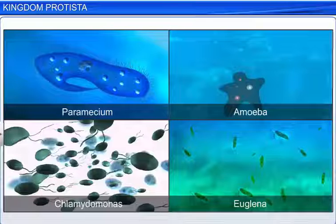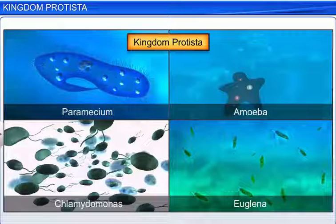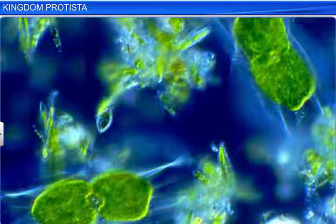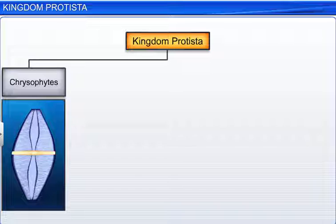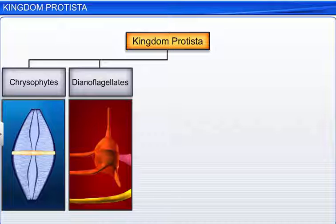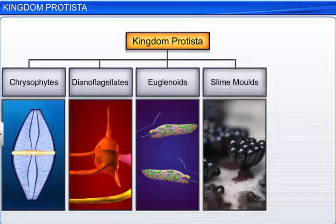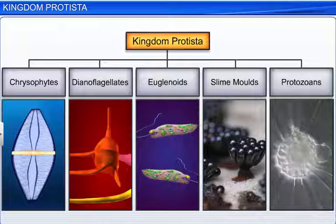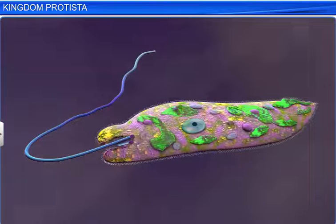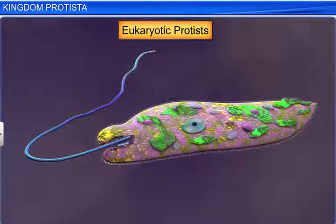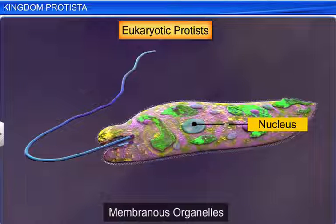All unicellular eukaryotes come under Kingdom Protista. Members of the Kingdom Protista are primarily aquatic. Chrysophytes, Dinoflagellates, Euglenoids, Slime Molds, and Protozoans are a few categories of Protists. Since they are all eukaryotes, they contain a well-defined nucleus and other membranous organelles.